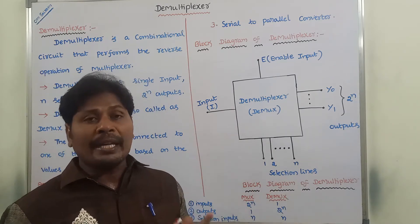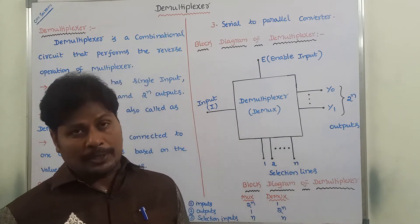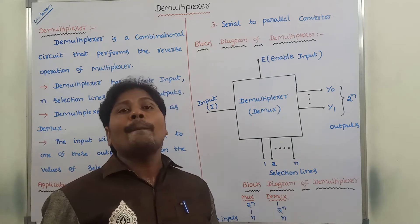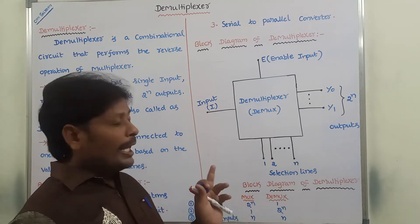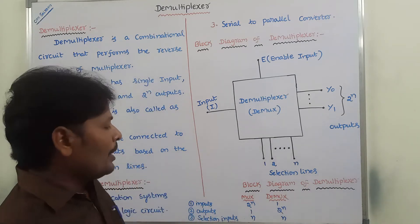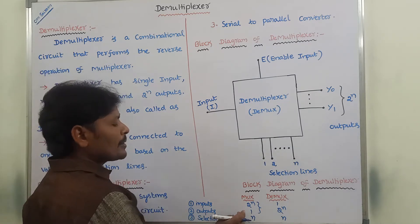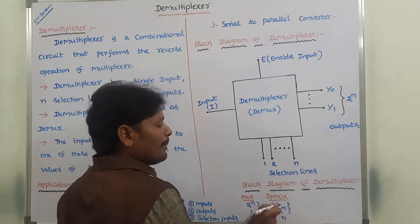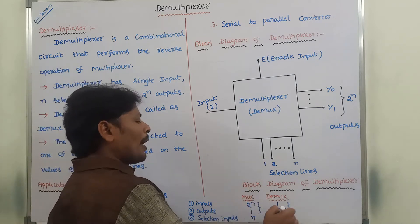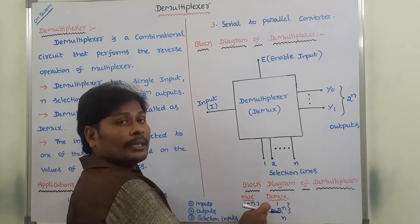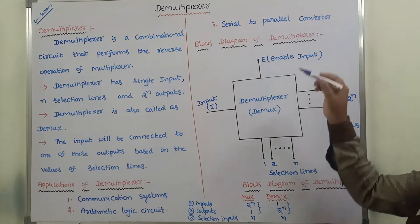A demultiplexer is a combinational circuit that can take only one input and produce 2^n number of outputs. Among the 2^n number of outputs, it can select only one output. Whatever output is selected, the input is connected to that output. By observing these two points — multiplexer takes 2^n inputs and produces one output, while demultiplexer takes one input and produces 2^n outputs — we can say that demultiplexer is the reverse operation of the multiplexer.